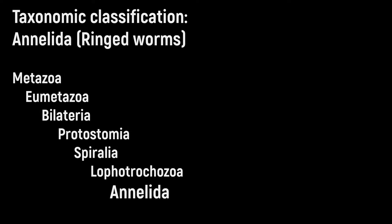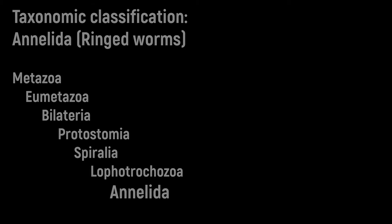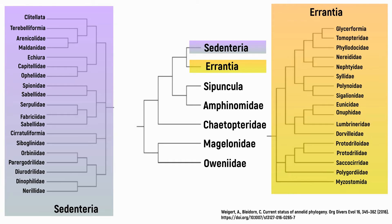The phylum Annelida are the segmented worms, containing over 22,000 species. The traditional morphological taxonomy of the Annelida has been completely overhauled based on genetic evidence in the 21st century. The main diversity of the Annelida is divided into the Sedentaria and Errantia.